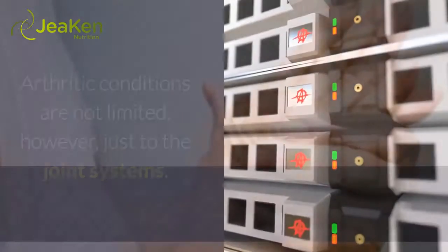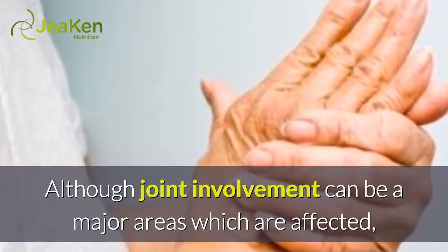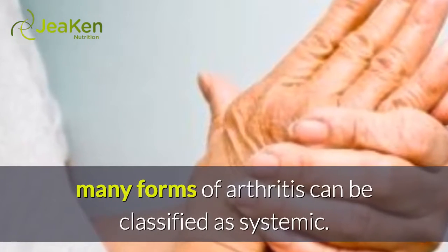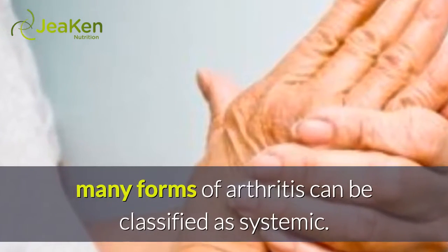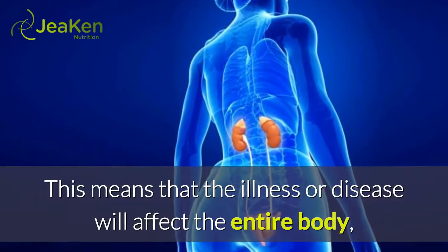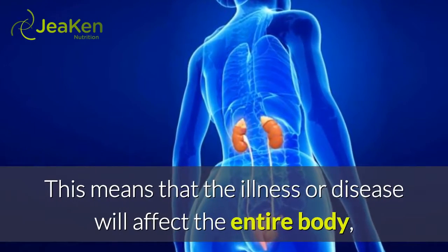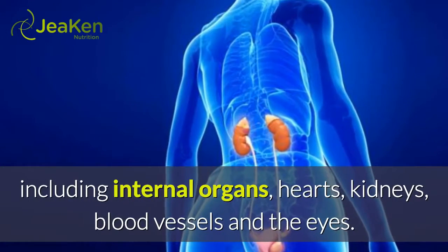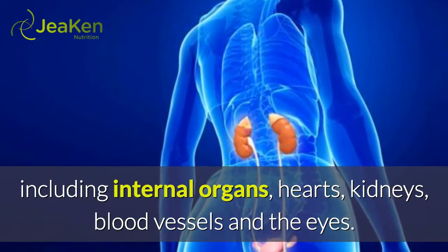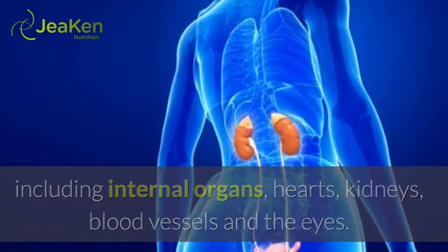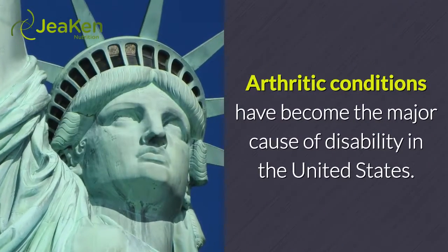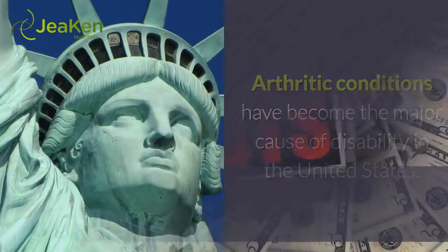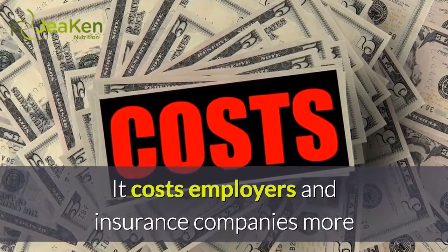Arthritic conditions are not limited just to the joint systems. Although joint involvement can be a major area affected, many forms of arthritis can be classified as systemic. This means that the illness or disease will affect the entire body, including internal organs, the heart, kidneys, blood vessels, and the eyes.